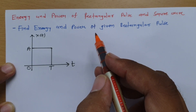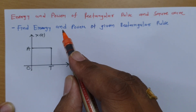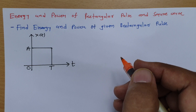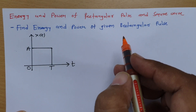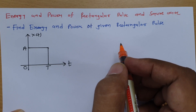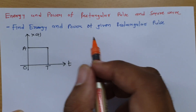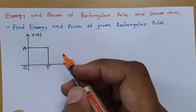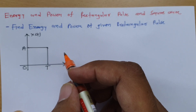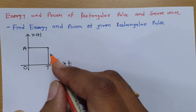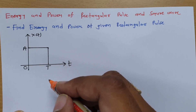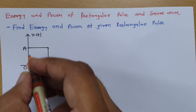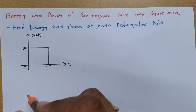We will first be calculating the energy and power of a rectangular pulse. Whenever we are given a signal that is not periodic, we should calculate the energy of that signal first. The reason is most non-periodic signals are energy signals. The rectangular pulse is not a periodic signal, so here one can see the rectangular pulse that is given.